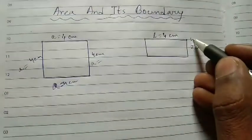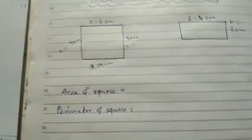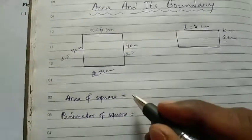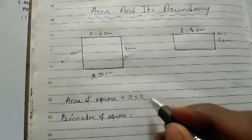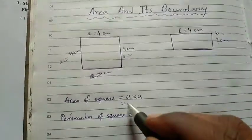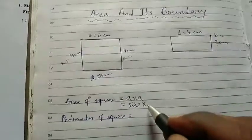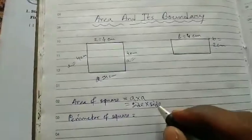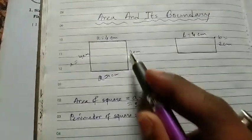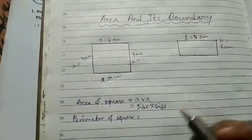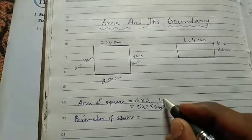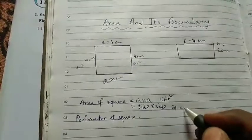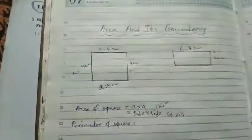Now you have to find the area of square. Square's area - how is it? Area is A into A, meaning side into side. So side into side - if you multiply one side and the other side, this is the area of the square. That is, this area is 4 into 4. But we need to write unit square, so it should be written as square unit or square centimeter.